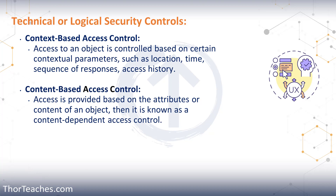You need to not confuse context-based with content-based access control. The content is what you're trying to access. Going back to the hospital example, we have the same programs used by nurses, doctors, physical therapists, and pharmacists. Depending on their job role, they get shown one set of information and one set of menus. Nurses and pharmacists are going to see different things because different things are important to them. So content-based access control is really us hiding or showing menus and information in the applications — the views, the databases — access to confidential information based on the subject and the content they're trying to access.